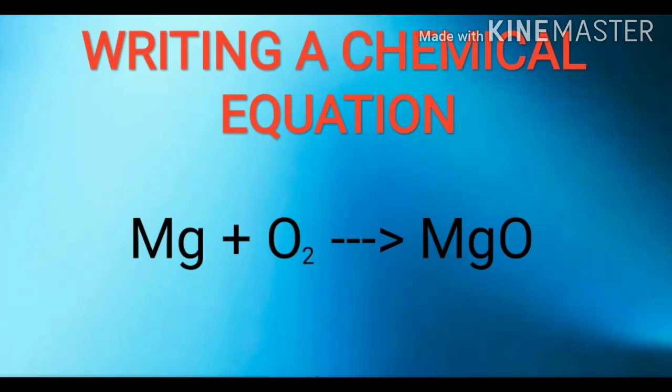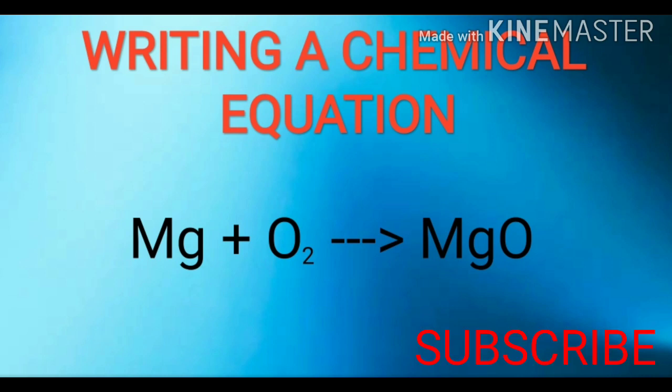Chemical equations can be made more concise and useful if we use chemical formulas instead of words. A chemical equation represents a chemical reaction. The formula of magnesium is Mg, oxygen is O2, and magnesium oxide is MgO. The above word equation can be written as: Mg + O2 → MgO. This is a way of rewriting the chemical equation.